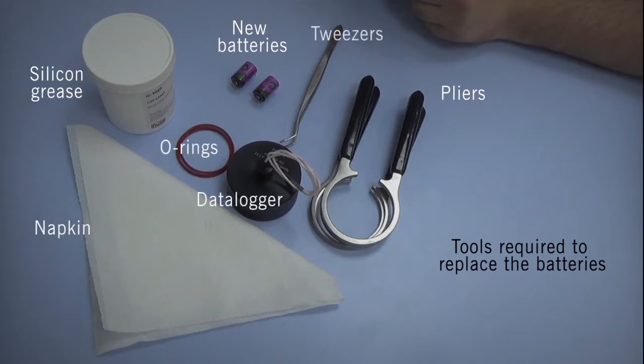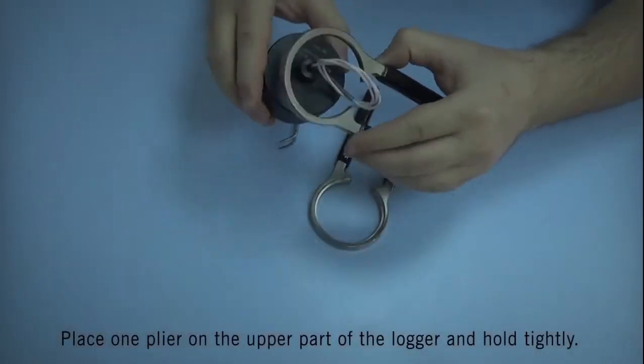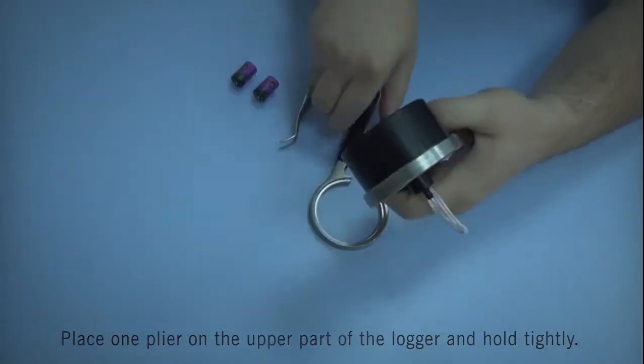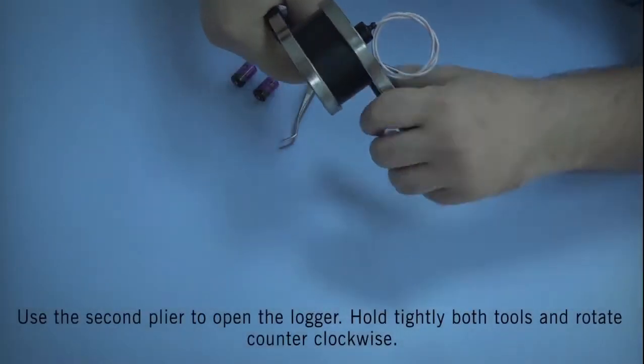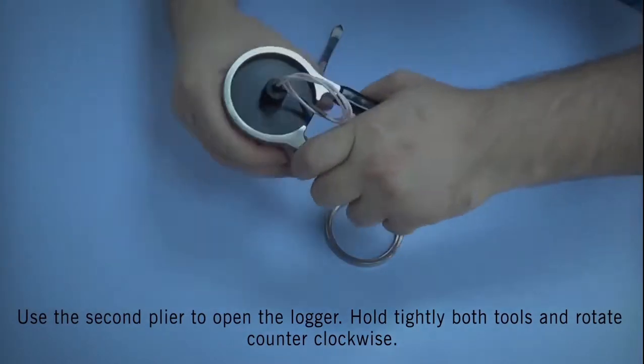Here are the tools needed to replace the batteries. Place one plier on the upper part of the logger and hold tightly. Use the second plier to open up the logger. Hold both tools tightly and rotate counter-clockwise.